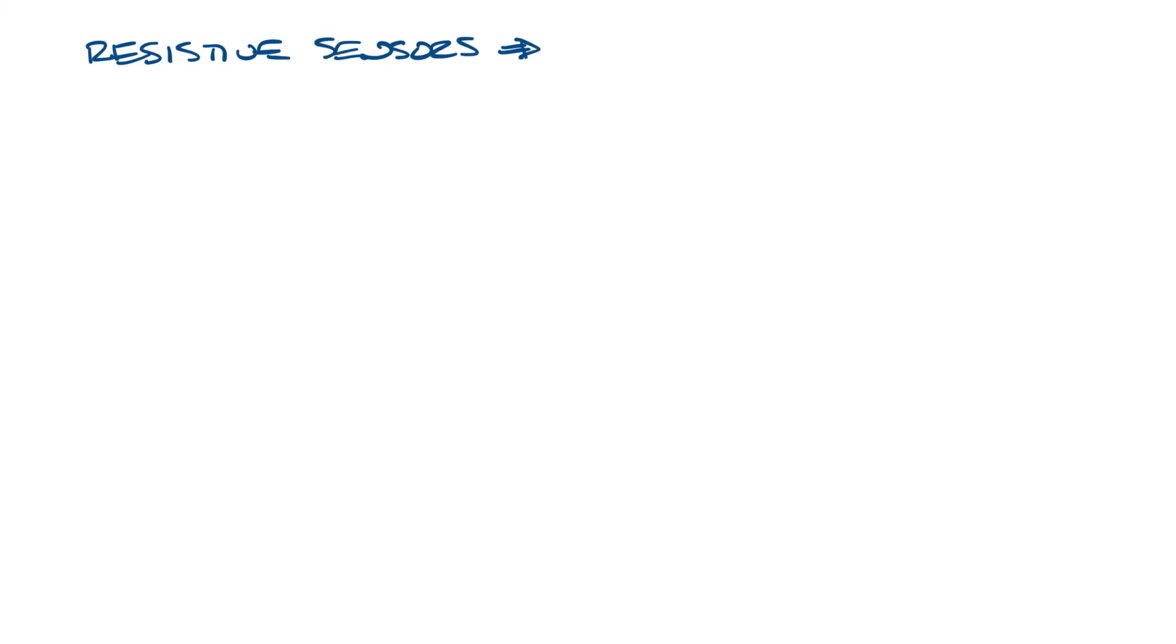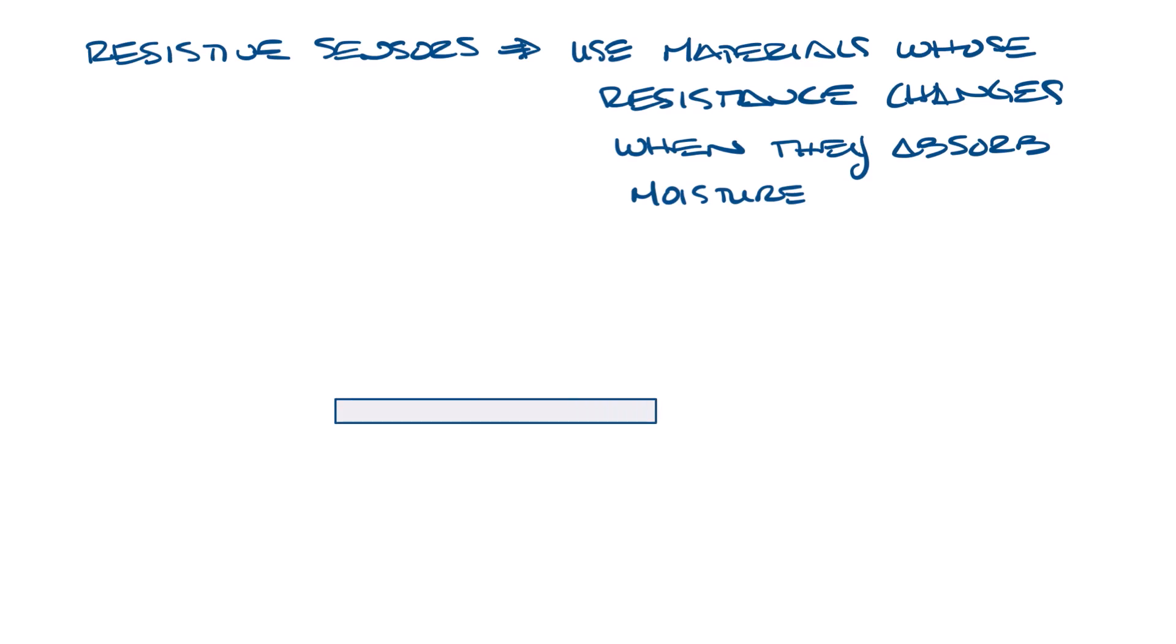Resistive sensors work with special materials whose electrical resistance changes when they absorb moisture. You would have two electrodes with a resistive material in between them. As the humidity goes up, it absorbs more water and that changes the resistance of the material, and that tells you that the humidity has changed.